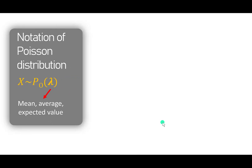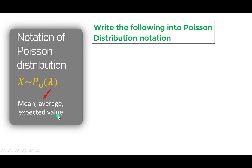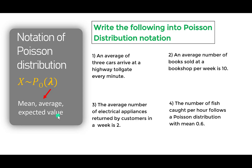The notation for Poisson distribution is: X distribute Poisson with lambda, where lambda is referred to as mean, average, or expected value. Writing examples into Poisson notation: Situation 1 — an average of three cars arrive at a highway toll gate every minute, so for one minute three cars arrive. We write X ~ Poisson(λ = 3), meaning three cars per one minute.